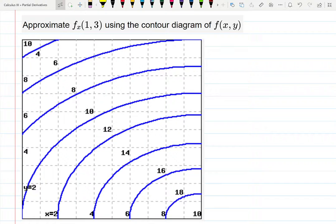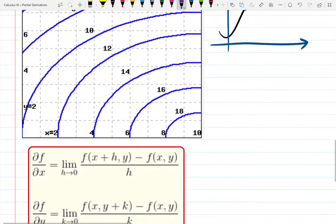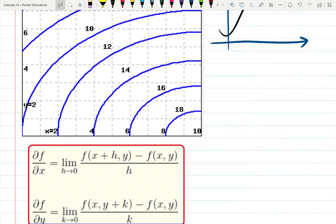In this example, they want to approximate the partial derivative at a point when we only know the contour diagram. We used to do something like this in calculus 1 when we only had the graph, and they would ask us to approximate the derivative of this point. The formula was something like that. Same idea here.